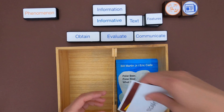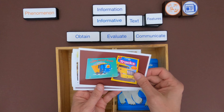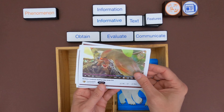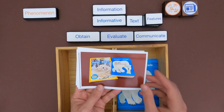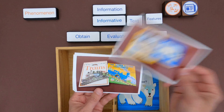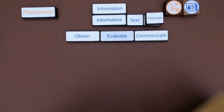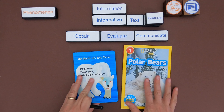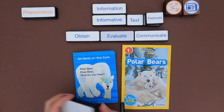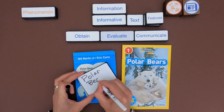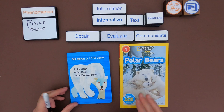After watching this video, you should be able to obtain, evaluate, and communicate information on objects like books on trucks or video like a cardinal parent feeding its offspring. I'm going to start by showing you how I do this with some texts around polar bears, and then you'll have a chance to do the same with trains. Looking at the texts I have in front of me, there's a common theme, so let me write down what the phenomena is — the phenomena I'm going to gather more information on is the polar bear.